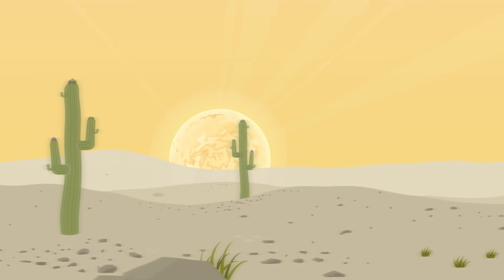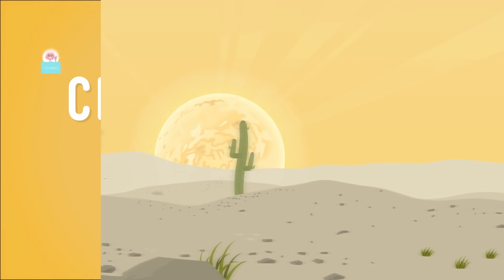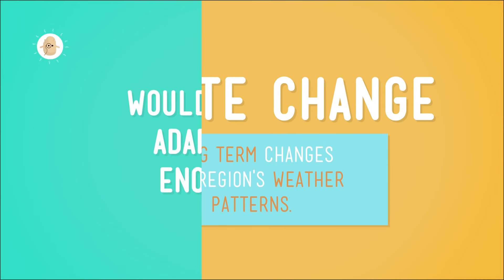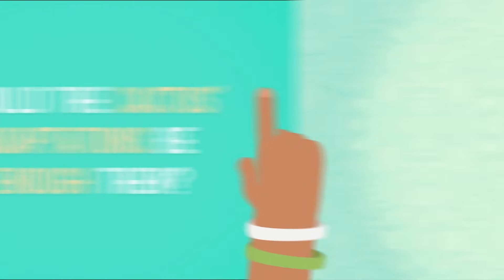Now, say something happened to Yuma's climate. Say, over the course of about 20 years, there were even hotter days and less rainfall than before. When weather patterns change over a long period of time, we call it climate change. Would the cactus's adaptations be enough then? Let's find out.